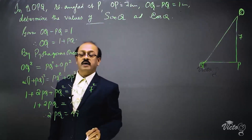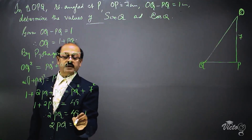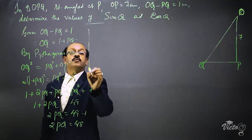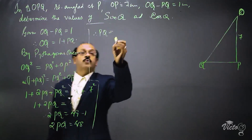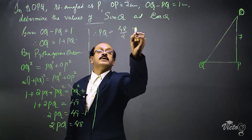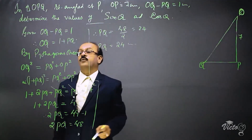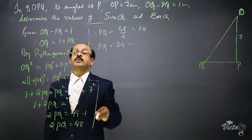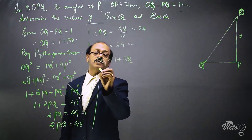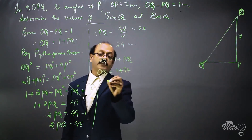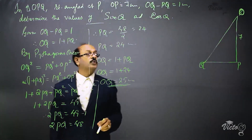Moving 1 to the right side: 2PQ equals 48, therefore PQ equals 48 divided by 2, which is 24 centimeters. Then OQ equals 1 plus PQ, that is 1 plus 24, so OQ equals 25 centimeters.